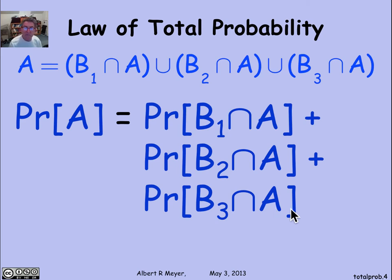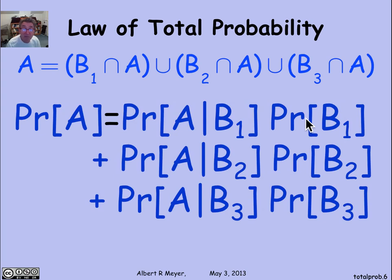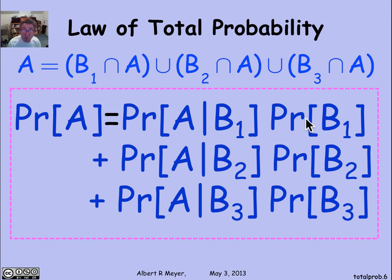Now, the most useful form of the law of total probability is when you replace this intersection B₁ intersection A by the conditional probability using the product rule. So let's replace it by the probability of A given B₁ times the probability of B₁. That's just another formula for B₁ intersection A. And if I do that with the rest of them, I now have the law of total probability stated in the usual way in terms of conditional probabilities where it's most useful.